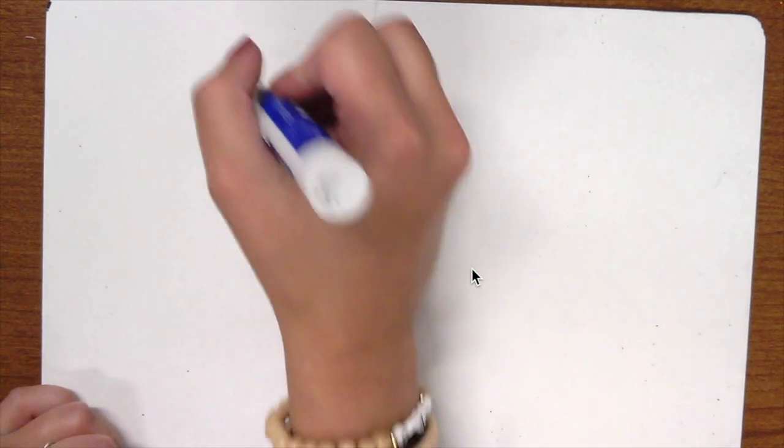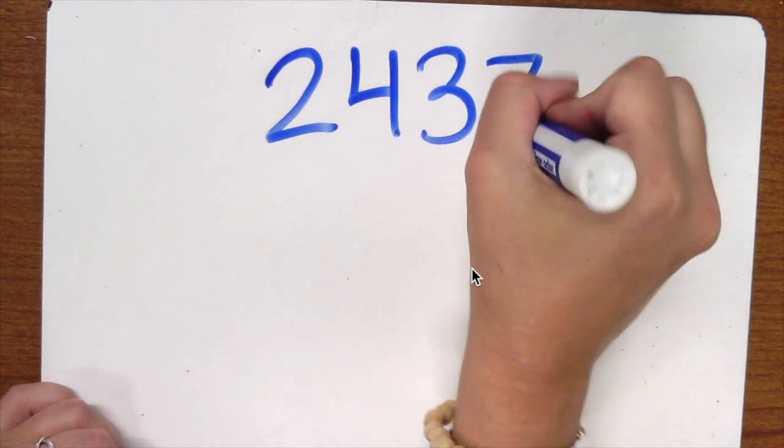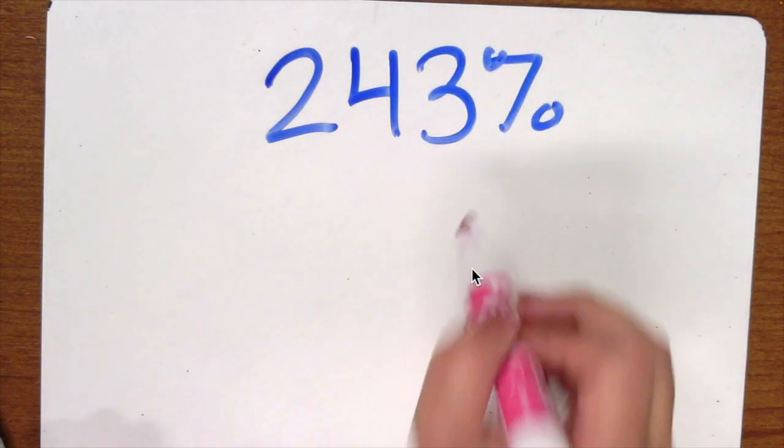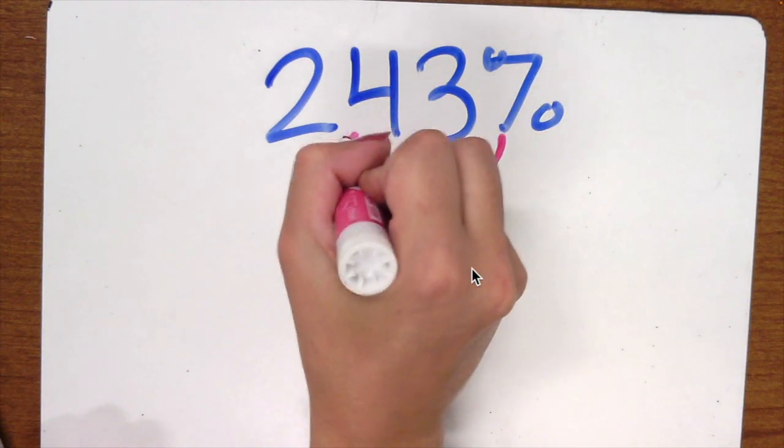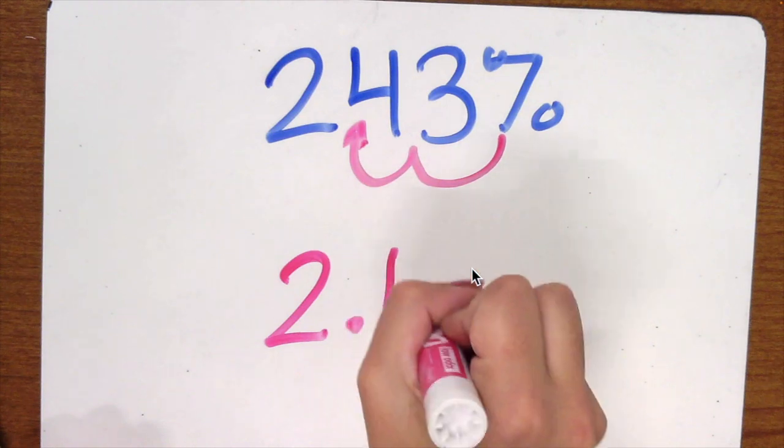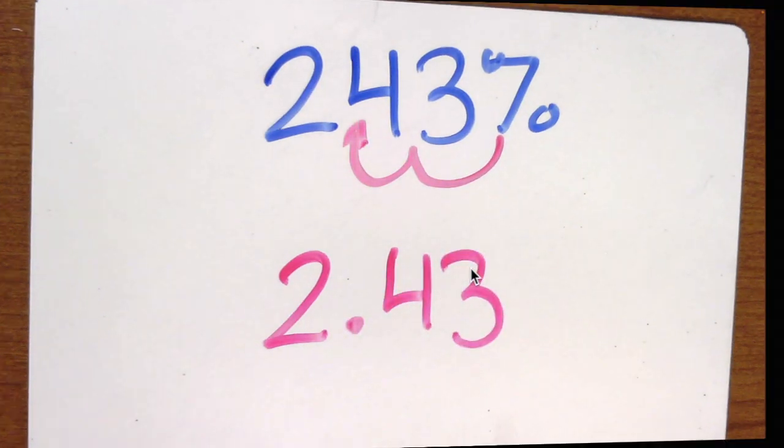Let's try another one. Say I have a bigger number where I have 243 percent and I want to make that a decimal. I start at the percent, I jump one, I jump two, that's where my decimal goes. So my new decimal will be 2.43.